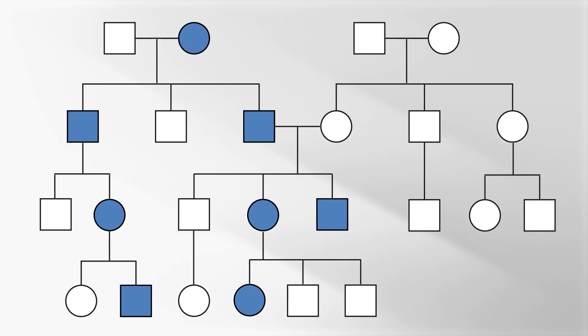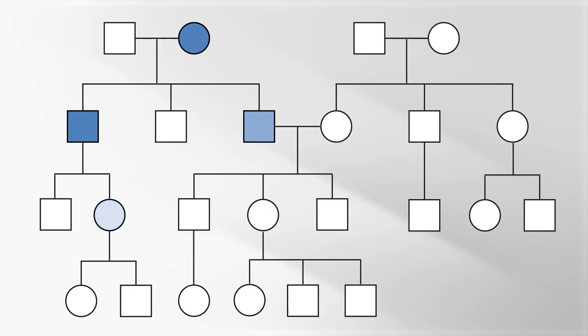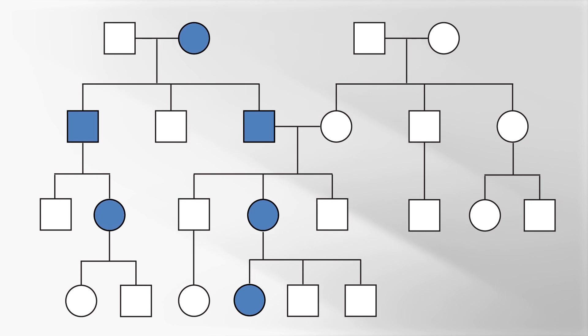As you can see, for some families, the pattern looks like a waterfall or cascade. Cascade screening can also start from the youngest member of the family.